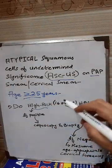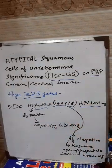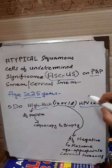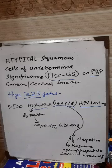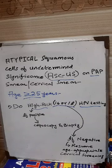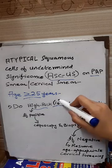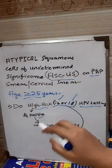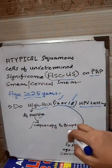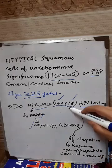By high-risk HPV testing, we check for the presence of HPV 16 or 18 in the transformation zone — also known as the squamous columnar junction — from which we take the sample for the pap smear. If we find HPV 16 or 18 present in those squamous cells and the test is positive, we have to immediately go for colposcopy and biopsy.